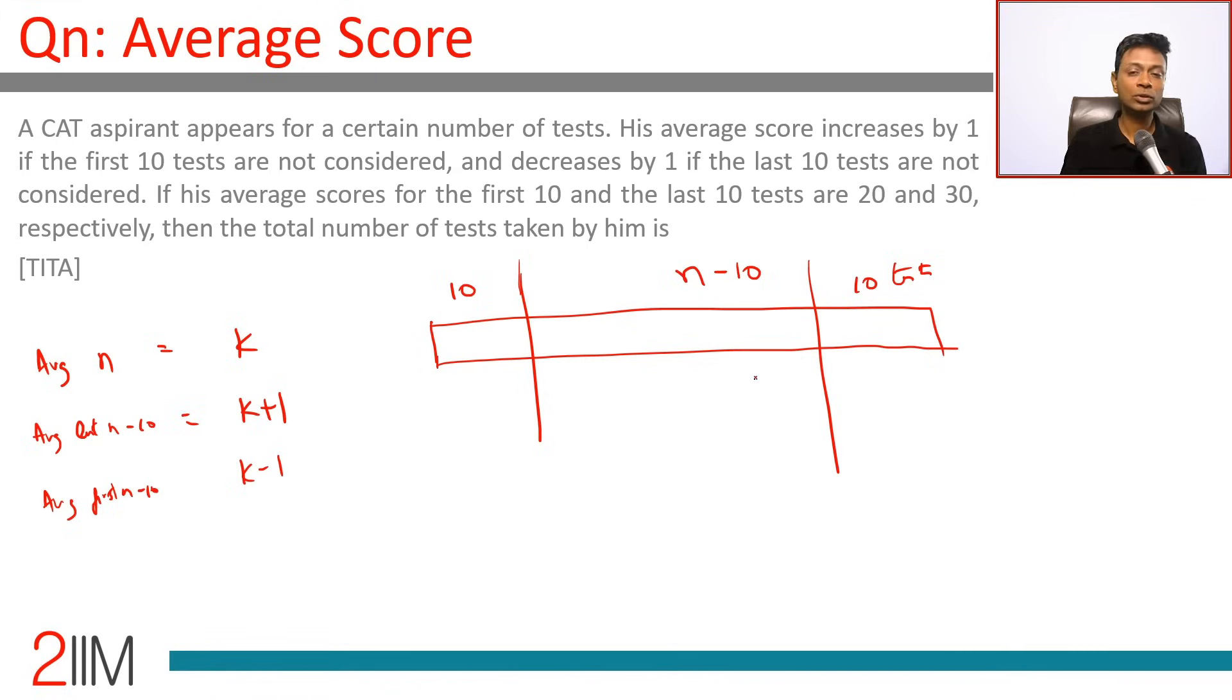Wonderful. So let us do this: overall there are n tests, so this should be n minus 20, so this number is n minus 10, this number is n minus 10.